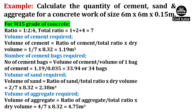Now let's take the case of M15 grade of concrete. As we know, the ratio is 1:2:4. Hence the total ratio will be equal to 1 + 2 + 4, which equals 7.